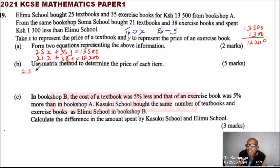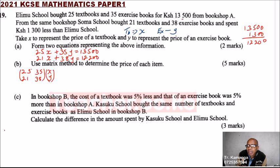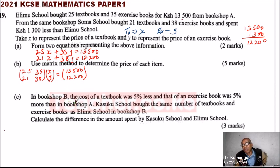We set up the coefficient matrix with 25 and 35 on the first row, and 21 and 38 on the second row. Within the bracket we have X and Y, and that should give you another matrix on the right: 13,500 and 12,200. That is the matrix formed from these linear equations.